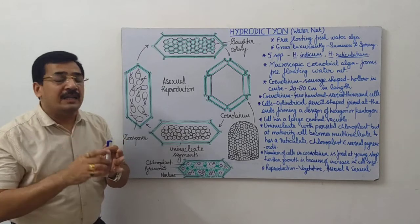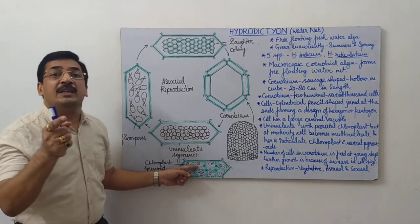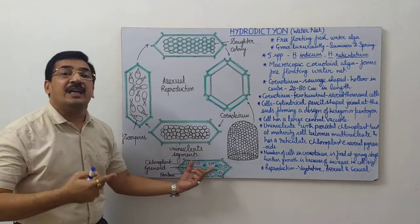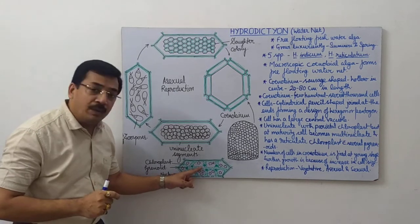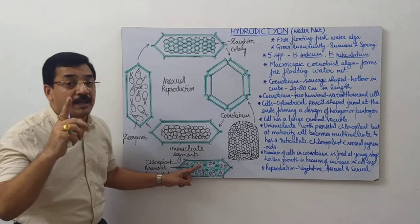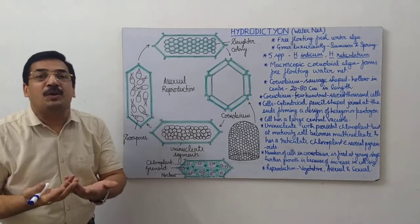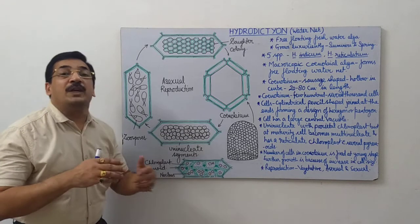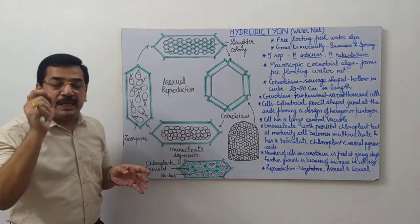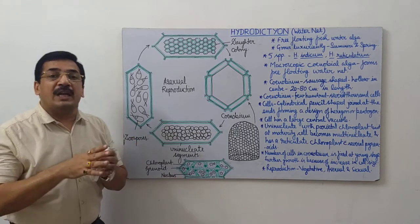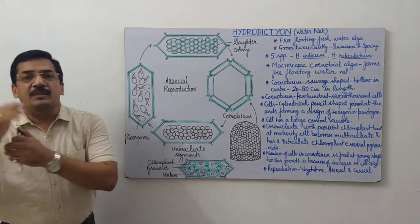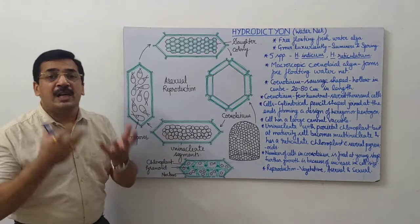When the cells are young, they are uninucleate with parietal chloroplast having single pyrenoid. But when the cells mature, they become multinucleate with a reticulate chloroplast having several pyrenoids. This is the basic difference between the young cells and mature cells. Whenever you see a young colony, you will see uninucleate cells. And if you find multinucleate cells, then you can say that the colony is a mature colony. This is a characteristic and interesting feature of Hydrodictyon.